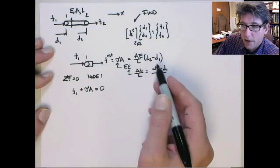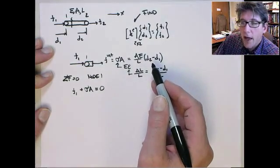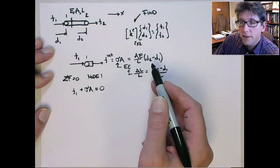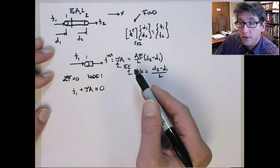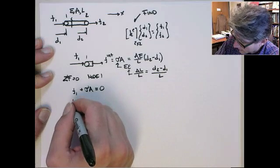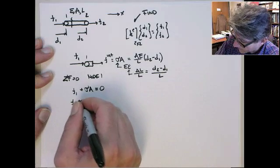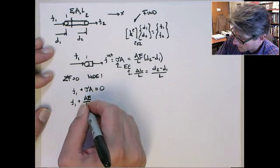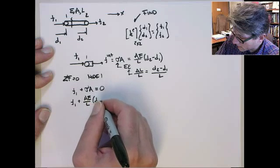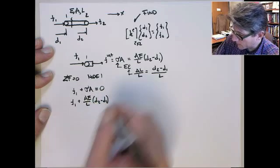Now substituting in EA on L, D2 minus D1 for sigma A, we get the following.